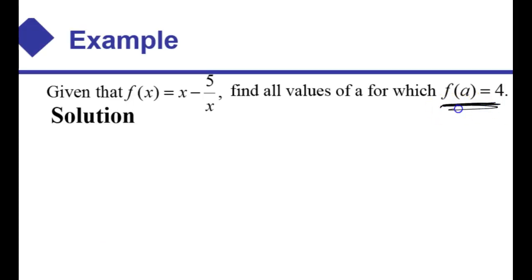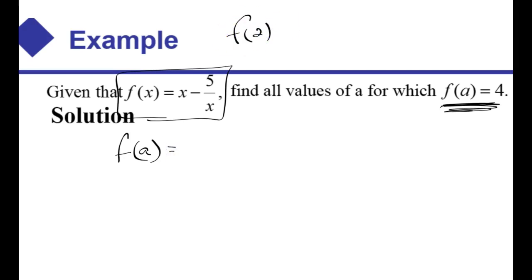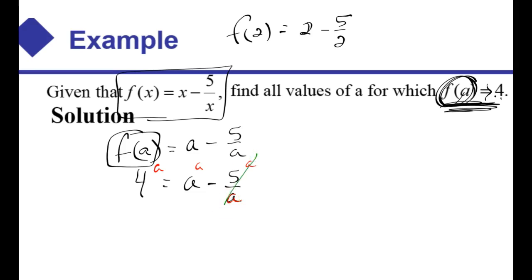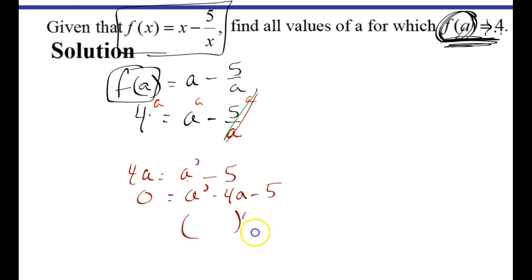Last example — this says let f of a equal 4. Well, we don't have f of a, we have f of x. So the first thing to do is find f of a: every time you see an x, you plug in an a. So here's the definition of f of a, and it says let f of a equal 4, so I'll substitute 4 for f of a. Now I've got a new problem in terms of a. The goal is to multiply through by a common denominator, which looks like a. So I multiply every term by a, cancel where I can, and what's left is 4a equals a squared minus 5. I see an a squared and an a, so I set it equal to 0: a squared minus 4a minus 5.